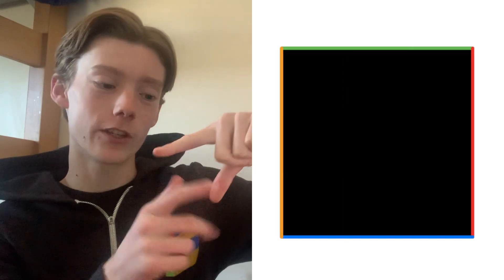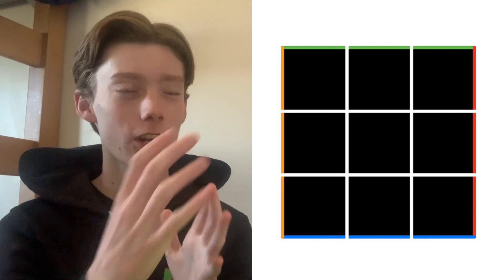All right, now let's go down to a one-dimensional Rubik's Cube. So instead of cutting a square into three by three, we're gonna cut just a one-dimensional straight line into three. So this is what it looks like, but where do we add the stickers?